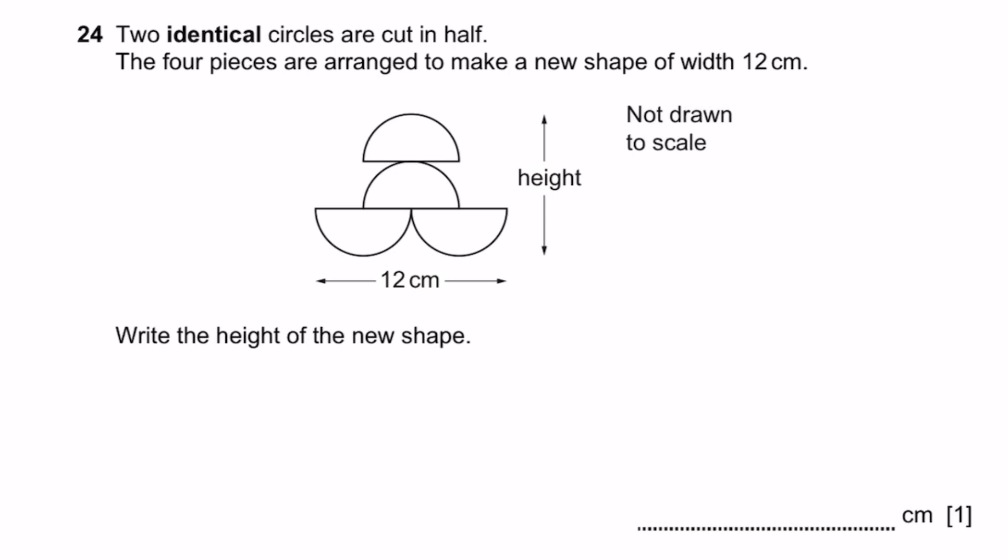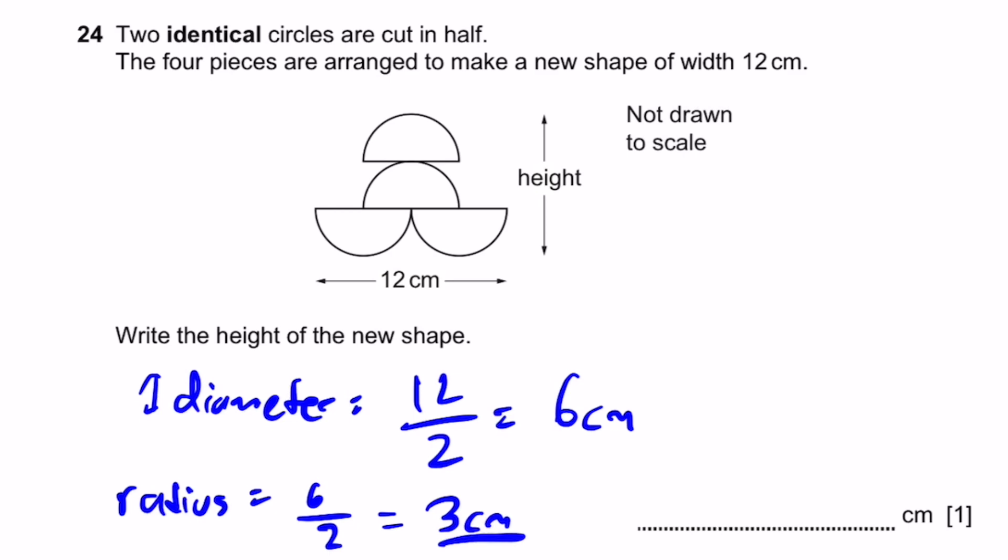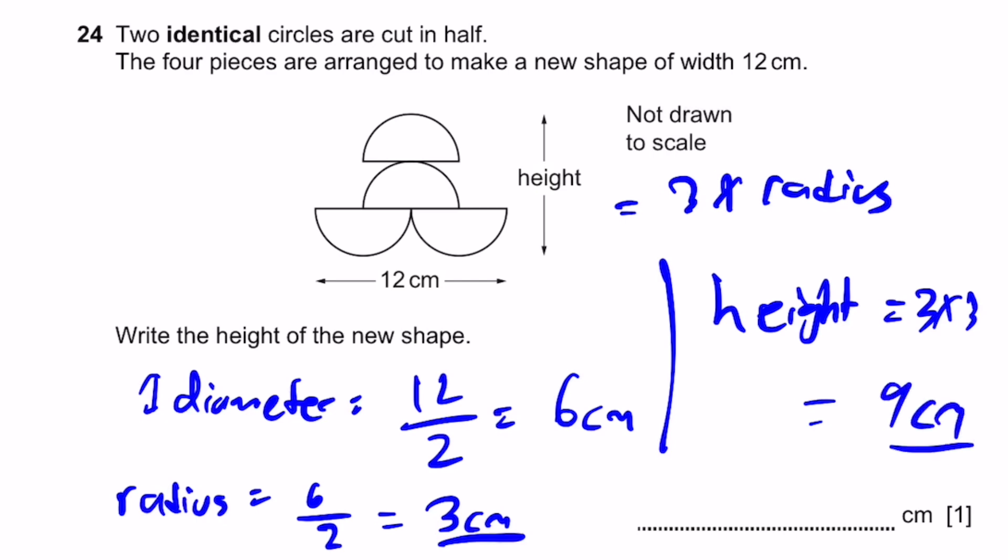Question 24. Two identical circles cut in half. The four pieces are arranged to make a new shape of width 12 centimeters. Write the height of the new shape. Well, 12 centimeters equals the length of two diameters of the circle. So the length of one diameter is 12 by 2, which is 6 centimeters. And the length of a radius is 6 by 2, because radius is half a diameter, which is 3 centimeters. Now, the height of the shape is equal to a radius plus a radius plus a radius, three times a radius. Therefore, the height is equal to 3 times 3, which is 9 centimeters.